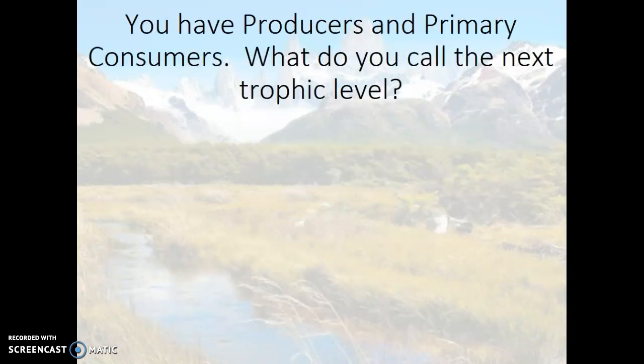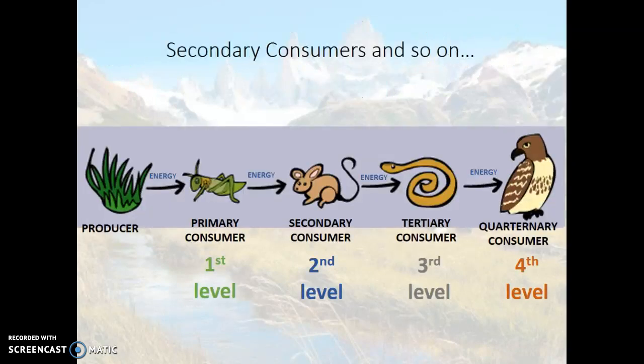So we have producers and primary consumers. What is the next trophic level called? Secondary consumers. Remember our chart — we have the first level, second level, third level, fourth level. Sometimes we also use the word 'apex,' meaning at the very top.